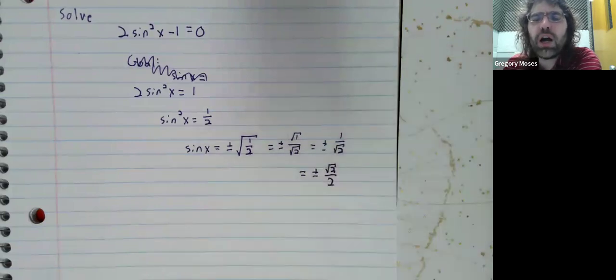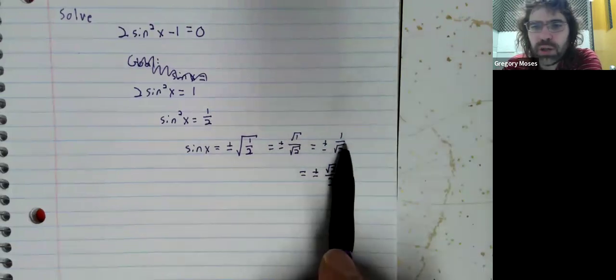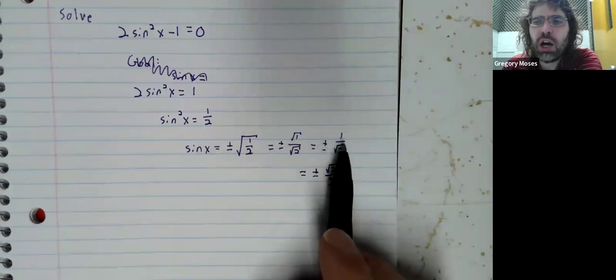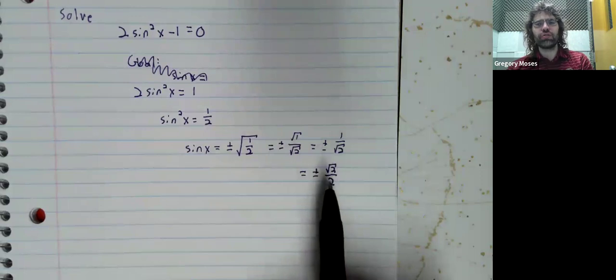We are rationalizing to go from here to here. We're multiplying top and bottom by the square root of 2.